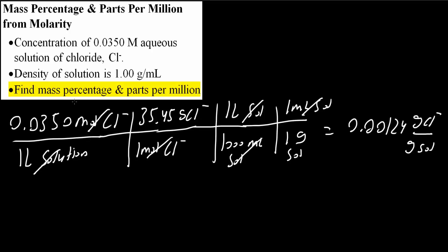We want to find the mass percentage. We have grams of Cl minus divided by grams of solution. Percentage just means multiply by 100. So 0.00124 grams of Cl minus divided by grams of solution times 100% gives us 0.124%. That's all we need to do for the first part, mass percentage.